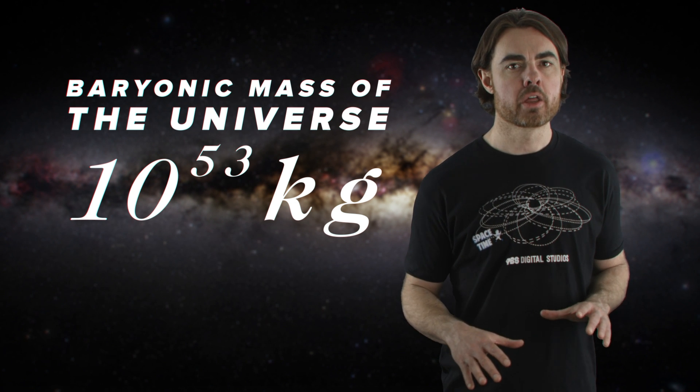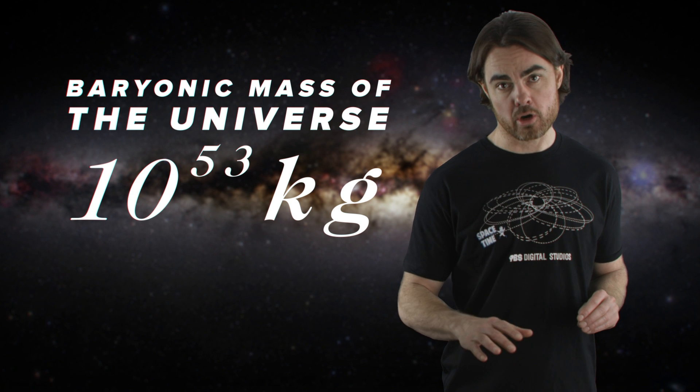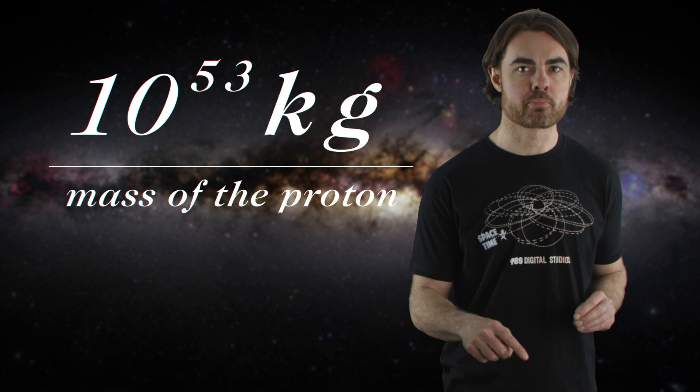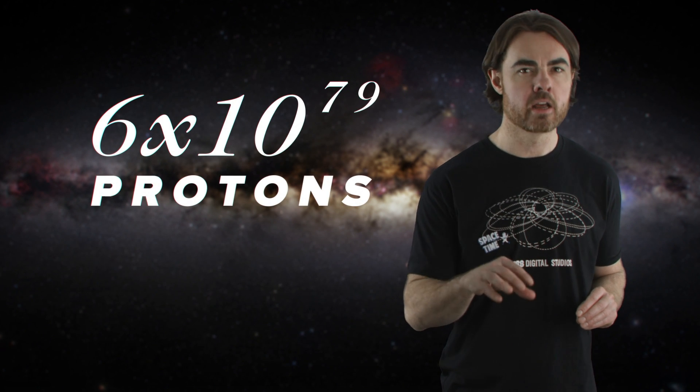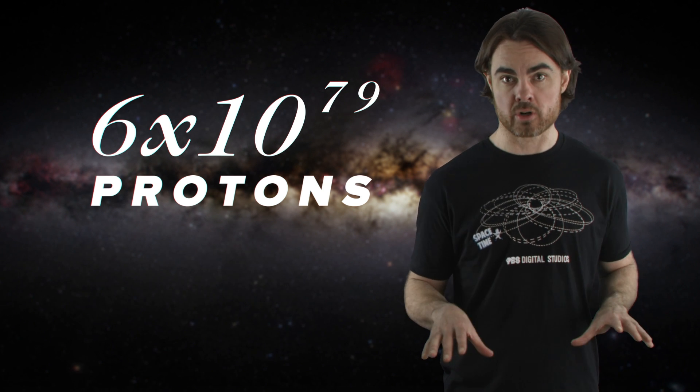They weigh almost nothing compared to the baryons. But we do know that there are about as many of them as there are protons. So divide the 10 to the 53 kilograms by the mass of the proton, and we get that there are 6 by 10 to the 79 protons in the observable universe and just as many electrons.